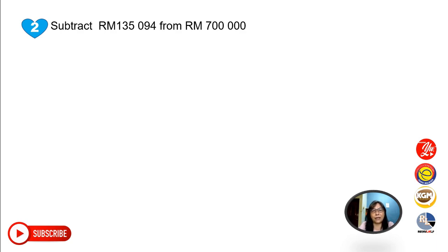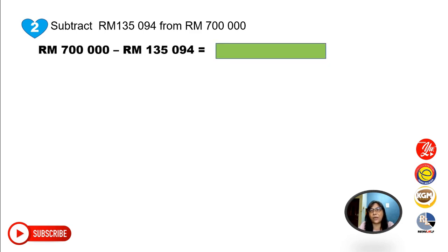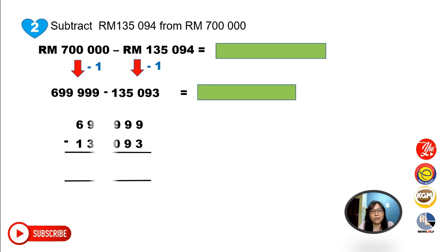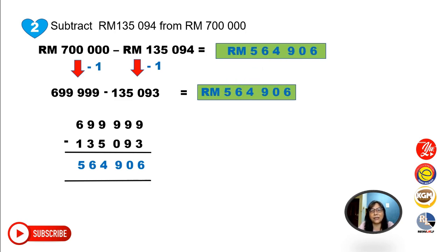What if you're going to subtract from a number with a lot of zeros? For example: RM700,000 minus RM135,094. You can use the normal method, but here is a different method — minus 1 from both numbers. RM700,000 minus 1 becomes RM699,999, and RM135,094 minus 1 becomes RM135,093. This makes borrowing unnecessary. The answer is RM564,906.